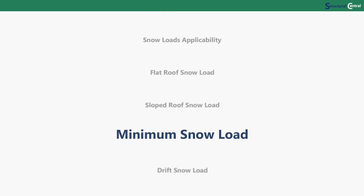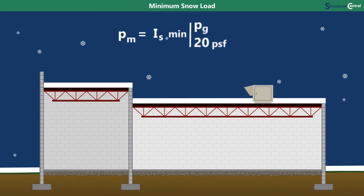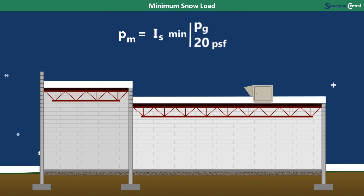In addition to the sloped roof snow load, you also need to determine the minimum snow load. If there is a single heavy snowstorm with little to no wind, the snow on the roof will be the same depth as on the ground — the minimum snow load covers this case. The formula is the importance factor IS times the minimum of the ground snow load PG and 20 PSF. It is similar to the flat roof snow load but does not include factors for the roof's exposure or thermal effects. The 20 PSF limitation is required since a single storm is unlikely to exceed this amount. This is a separate uniform load case that does not need to be combined with drift.